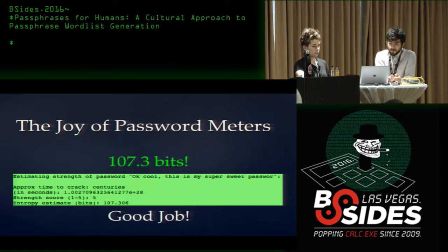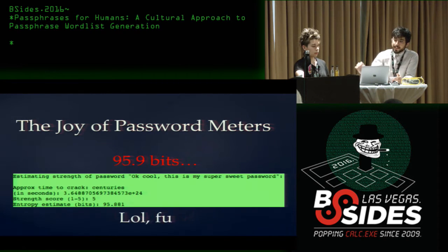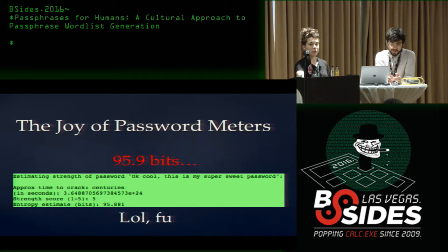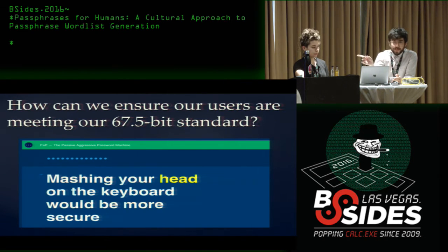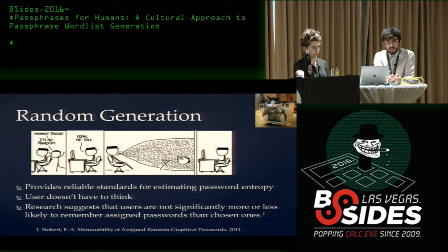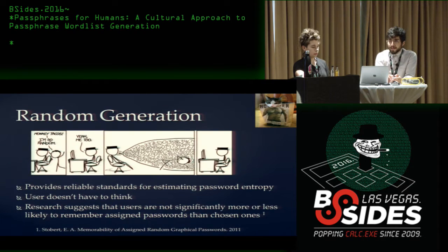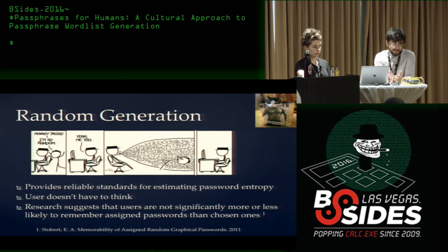The other problem with user-chosen passphrases and meters is the frustrating UX of typing along, seeing the strength go up, and then the final character causing the meter to drop. We're still at the question of how to ensure users meet the standard. The passive-aggressive password meter suggested: maybe if you just mash your head on the keyboard it would be more secure — which suggests that random generation would mean users don't have to think about passwords and we'd have reliable entropy estimates. Academics have actually studied this and found it doesn't matter if users pick their own passwords or are given them — they are equally likely to remember or forget either way. So why not let it be random?